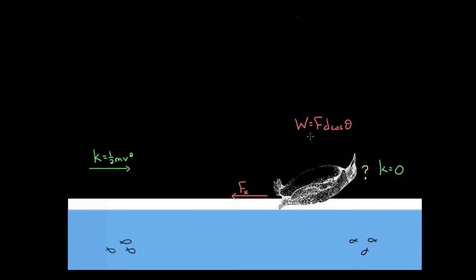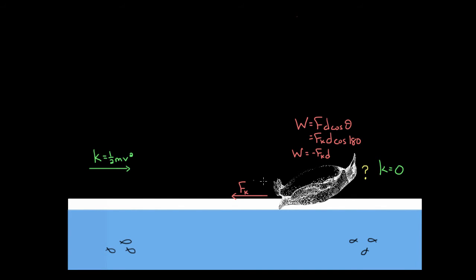If we want to find the work done by the force of friction, we would plug in the force of friction — the magnitude of it — times the distance that the penguin slid to the right. This theta in cosine theta is always the angle between the force and the direction of motion. The penguin's sliding to the right; the force is directed to the left. The angle between leftward and rightward is actually 180 degrees, so cosine of 180 gives you negative one. So the work done by the force of friction on this penguin is going to be negative FkD — negative the force of friction times the distance the penguin slid.